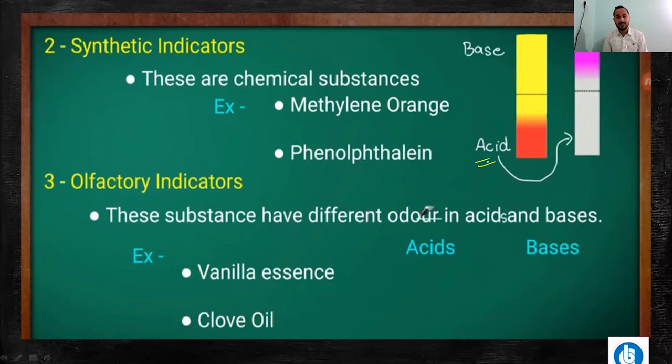If we talk about phenolphthalein, in an acidic solution, if you add 2-3 drops of phenolphthalein, it is colourless — no colour change. But in a basic solution, it shows pink colour. So in phenolphthalein: in acidic solution it is colourless, and in basic solution it shows pink colour.